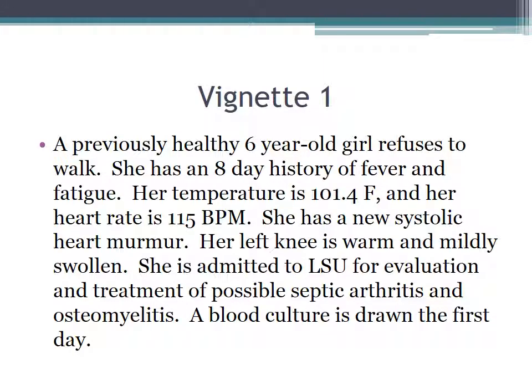For our first vignette, we have a previously healthy six-year-old girl who refuses to walk. She has an eight-day history of fever and fatigue. Her temperature is 101.4 degrees Fahrenheit, her heart rate is 115 beats per minute. She has a new systolic heart murmur, her left knee is warm and mildly swollen, and she is admitted for evaluation and treatment of possible septic arthritis and osteomyelitis.